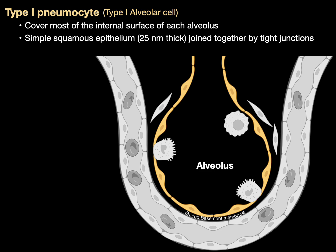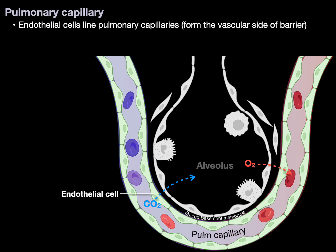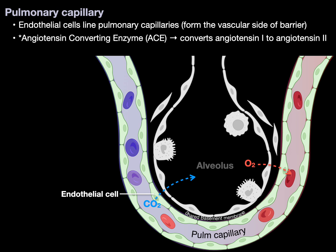Each of those cells is joined by tight junctions. This thin cell is ideal for gas exchange — for CO2 to diffuse from blood to the alveolus and O2 from the alveolus into the blood. A pulmonary capillary, as with all capillaries, is lined by endothelial cells and they form the vascular side of the barrier. Pulmonary capillaries also have angiotensin converting enzyme, or ACE, lining their cell membrane, which converts angiotensin 1 to angiotensin 2 as part of the RAS system.